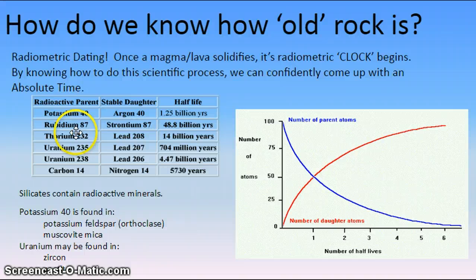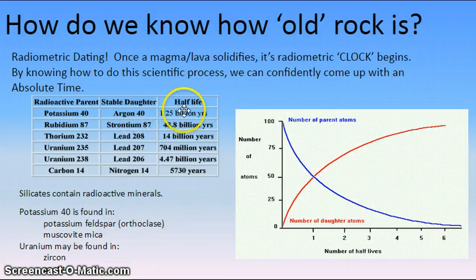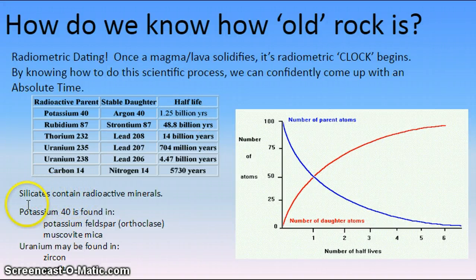So these are some known radioactive parents that decay into known stable daughters in known half-life years. Obviously, potassium-40 decays into argon-40 in 1.25 billion years. This is a big number. So we would use this particular ratio here when we're trying to figure out something that goes back into deep geologic time. But here's how this applies to minerals.